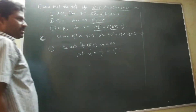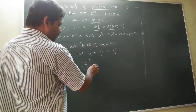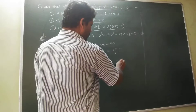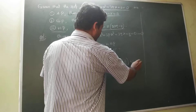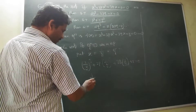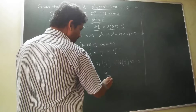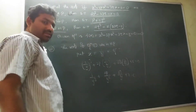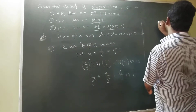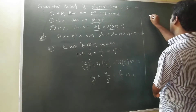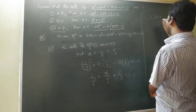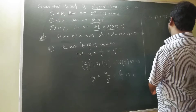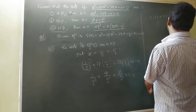So (1/y)³ plus 3P into (1/y)² plus 3Q into (1/y) plus R equal to 0. That gives 1/y³ plus 3P/y² plus 3Q/y plus R equal to 0. Now multiply through — y³ times: 1 plus 3Py plus 3Qy² plus Ry³ equal to 0.